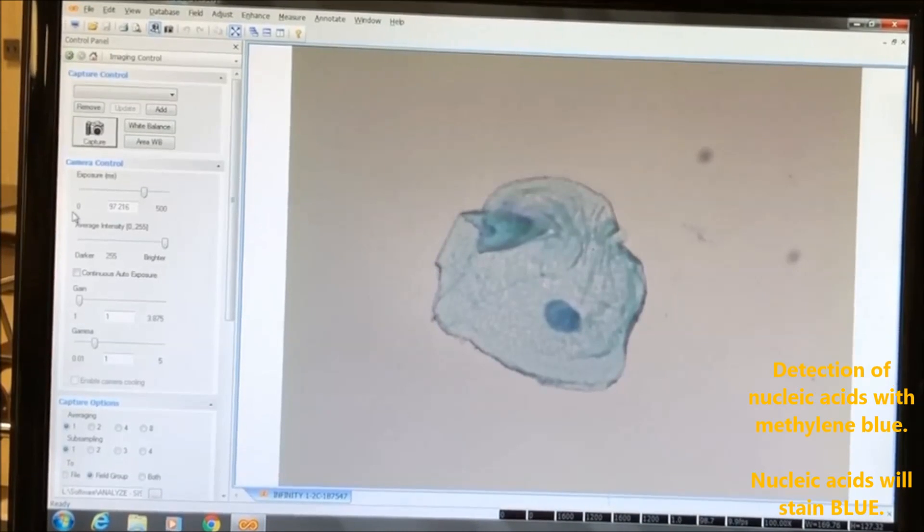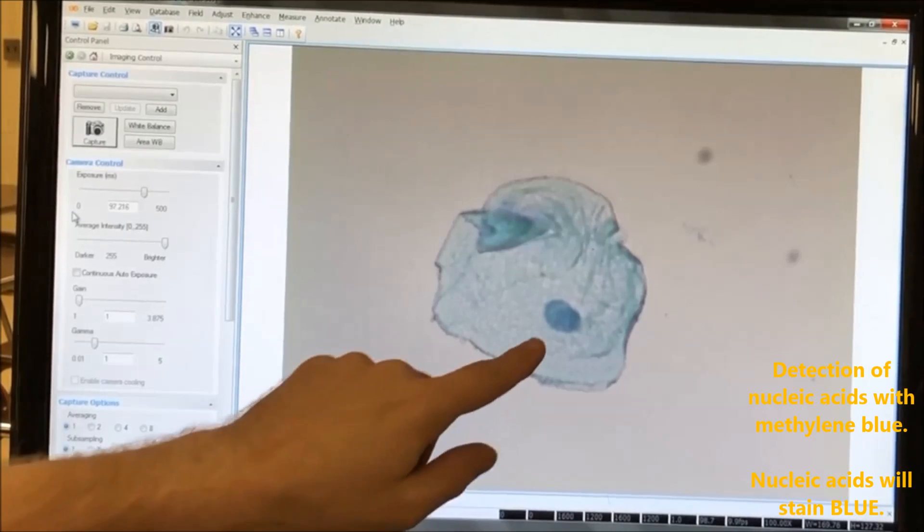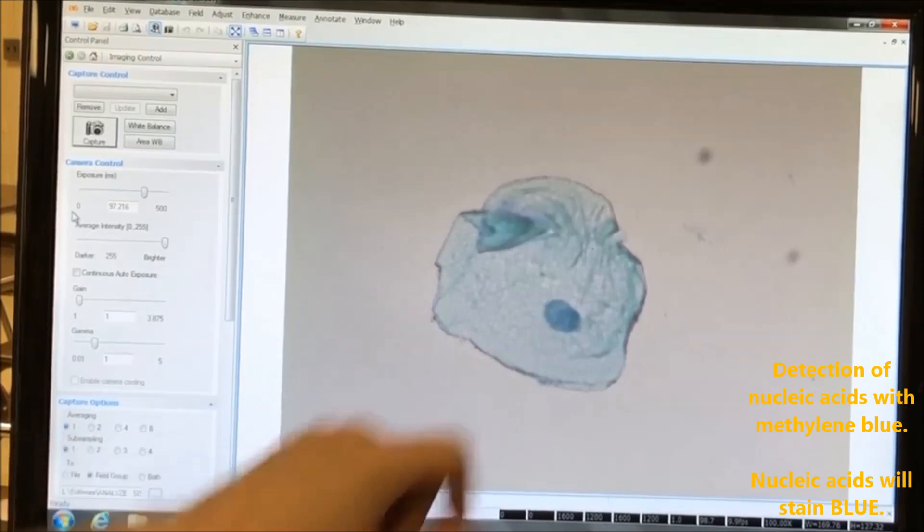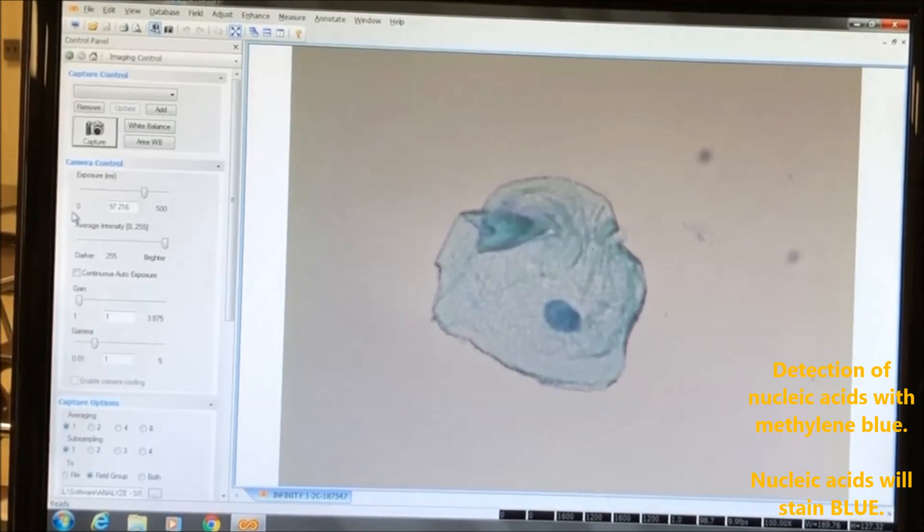So here we see one of my cheek cells. And as you can see, the nucleus here has stained blue because of the methylene blue. Methylene blue, again, stains for nucleic acids. Hence why our nucleus is blue because it contains DNA.